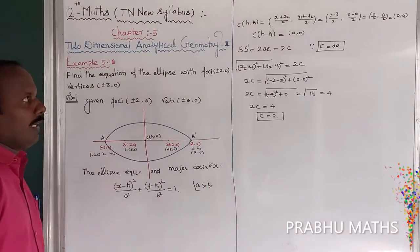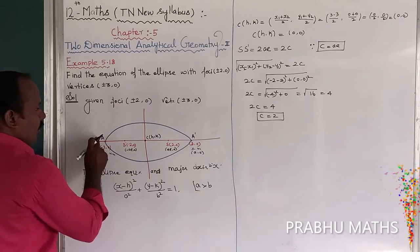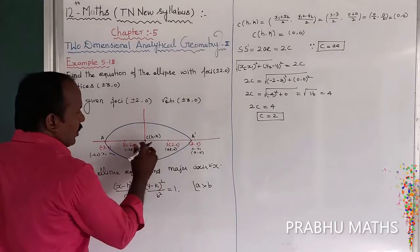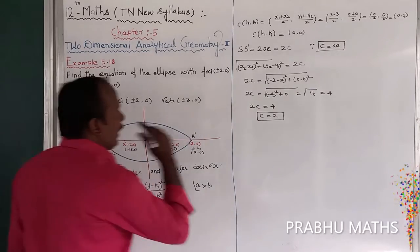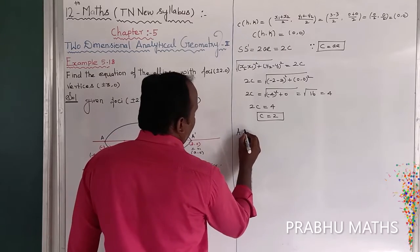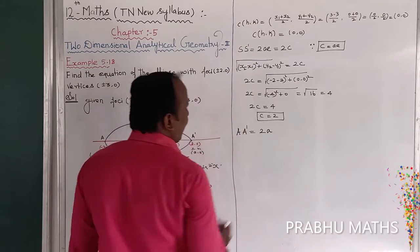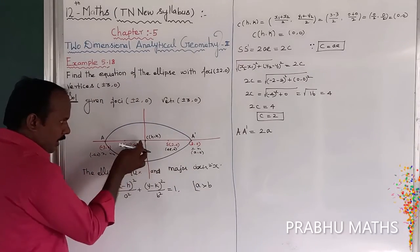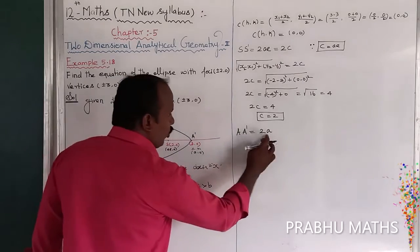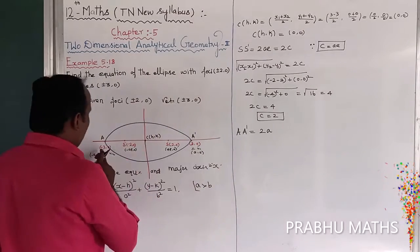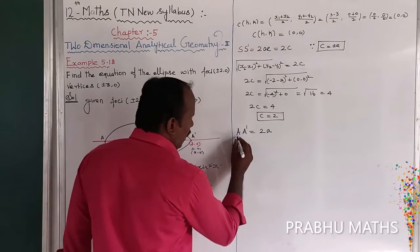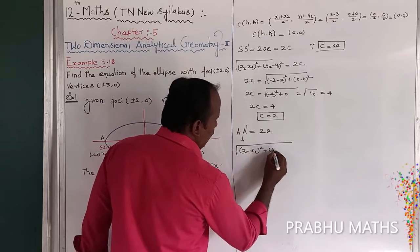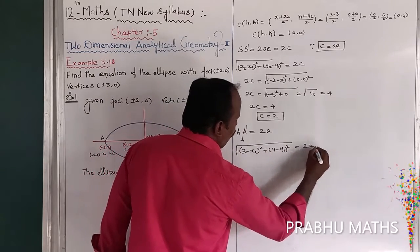Next, find the value of a. The distance of AA' equals 2a. Using the vertices (3, 0) and (−3, 0), apply the distance formula: √[(3 − (−3))² + (0 − 0)²] = 2a.